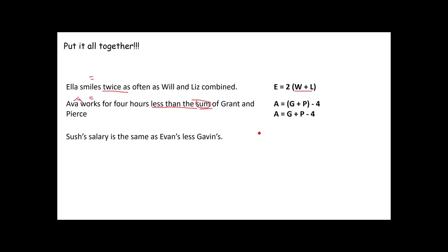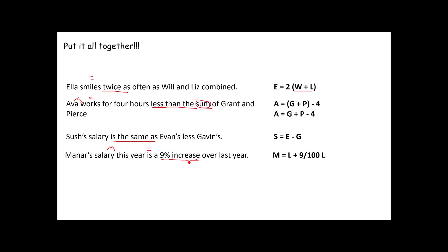'Shush's salary is the same as Evans less Gavin's' — the phrase is the same as is your equal sign: Shush = Evans - Gavin. And one more: 'Menard's salary this year is a 9% increase over last year.' Notice this is a percent increase — salary is is my equal sign. So Menard's salary this year, M, equals last year plus 9/100 of last year: M = L + (9/100)L. This is the starting amount plus 9% of that amount giving the total. Or if you prefer the decimal: M = L + 0.09L.